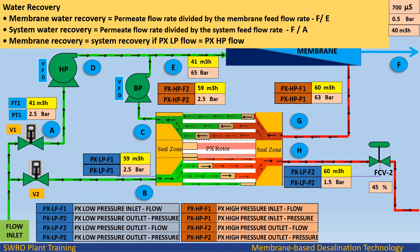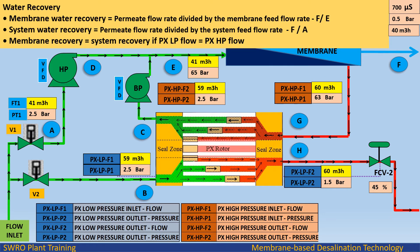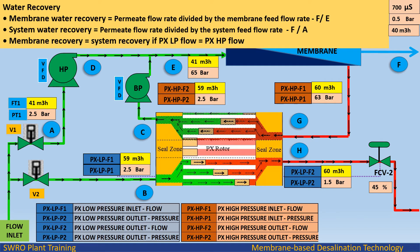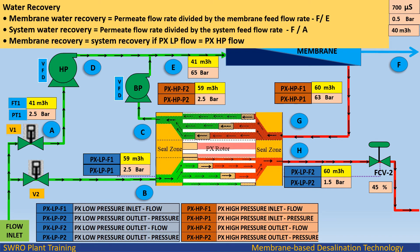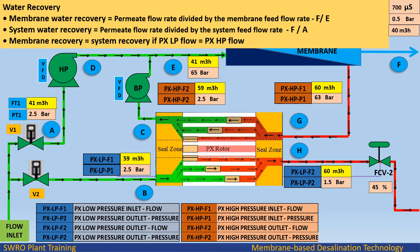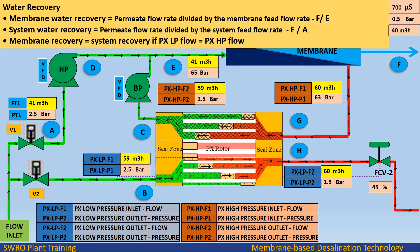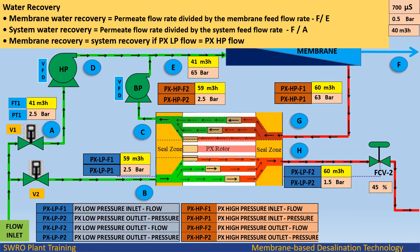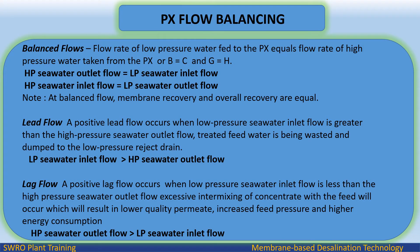Water recovery: membrane water recovery equals permeate flow rate divided by membrane feed flow rate (F/E). Membrane water recovery equals system recovery when PX LP flow equals PX HP flow. PX flow balancing — balanced flows: the flow rate of low-pressure water fed to the PX equals the flow rate of high-pressure water taken from the PX, where B equals C and G equals H. HP concentrate water outlet flow equals LP concentrate water inlet flow, and at balanced flow, membrane recovery and overall recovery are equal.